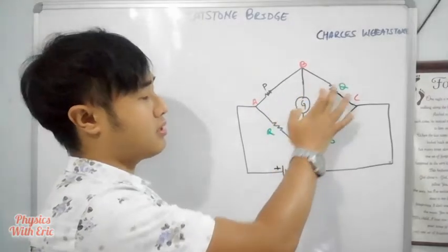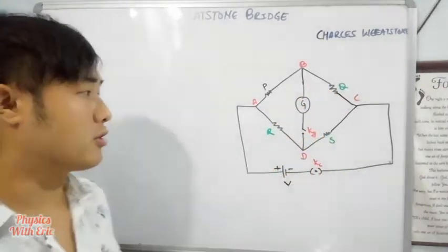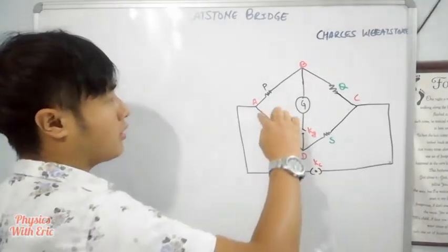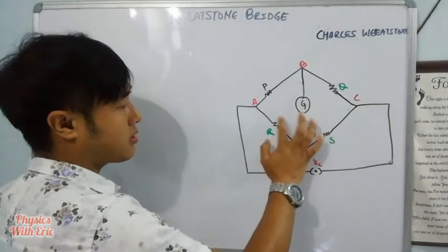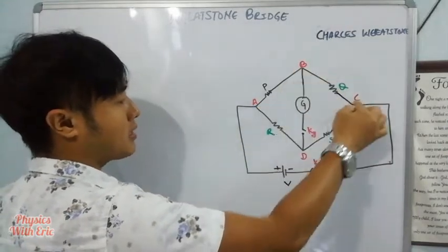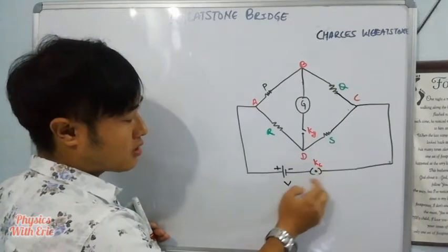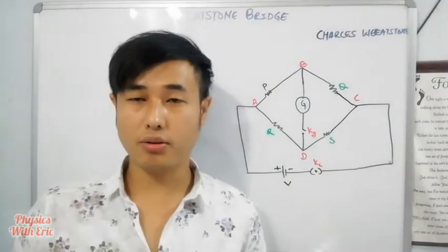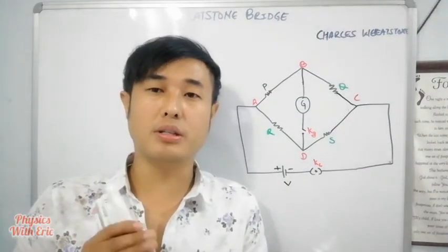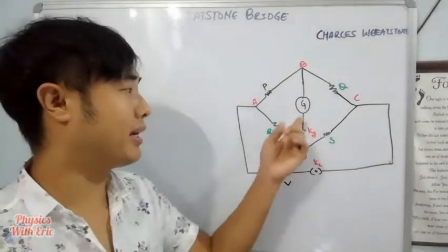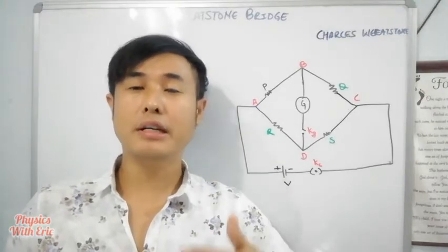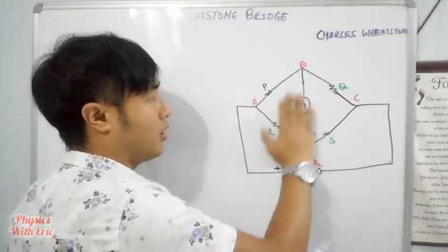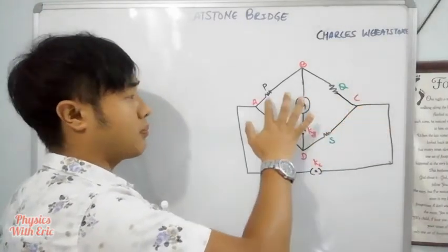The unknown resistance is denoted as S or sometimes X. So let's draw the figure of the Wheatstone Bridge. In the figure, we have four resistors P, Q, R, S arranged in a loop labeled A, B, C, D. A galvanometer is connected in the bridge between points B and D.